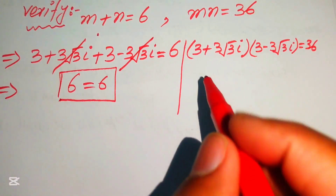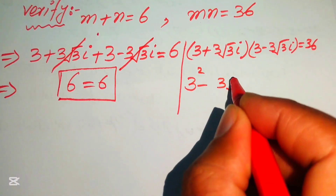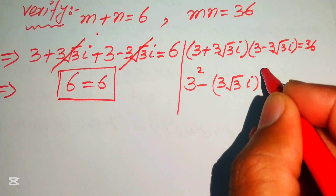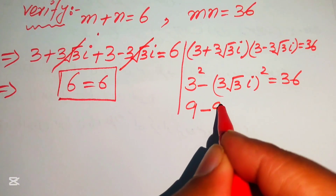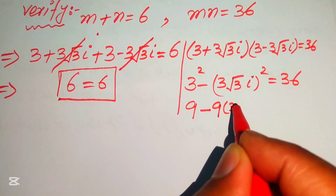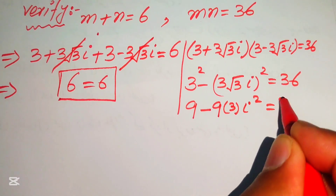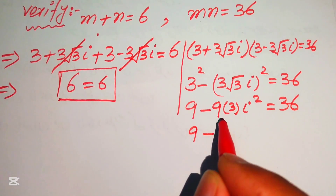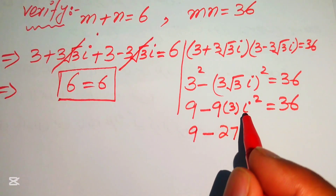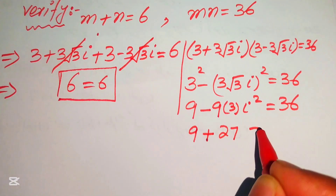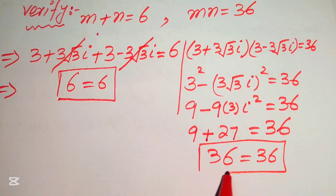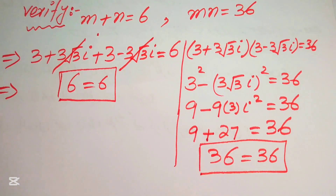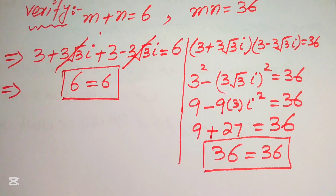For the second equation we apply the algebraic identity: 3 squared minus 3 times square root of 3 iota, squared, equals 36. We get 9 minus 9 times 3 times iota squared equals 36. Since iota squared equals minus 1, this becomes 9 plus 27 equals 36, which confirms 36 equals 36. The first solution satisfies both equations. This is the final answer. Thank you so much for watching — please subscribe to my channel for more exciting videos.